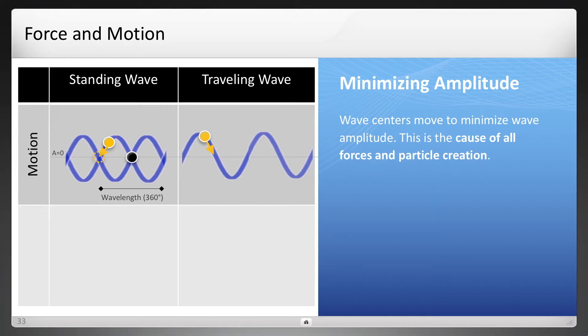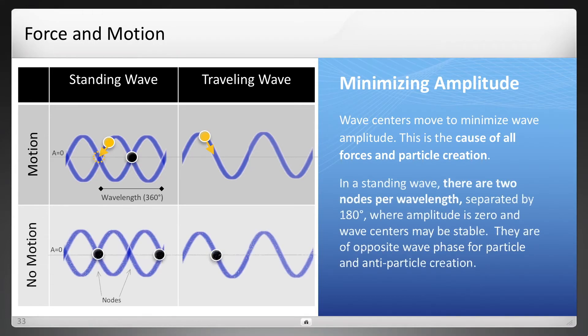In a standing wave, there are two nodes per wavelength that is point of minimal amplitude, which is essentially zero as those waves combine. And that allows a position for wave centers.